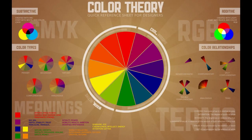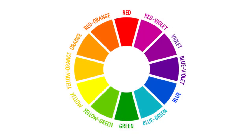Color is one of the fundamentals of graphic design. It's a really powerful tool which, when used correctly, can have a strong and meaningful impact on the viewer. So to learn to use it, you must first learn the basics. We begin with a simple color wheel, also known as a pigment wheel. It's a very useful tool for understanding the relationships and mixes of pigment-based paints and inks.